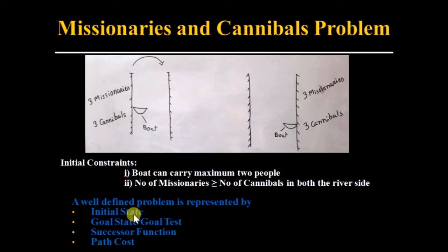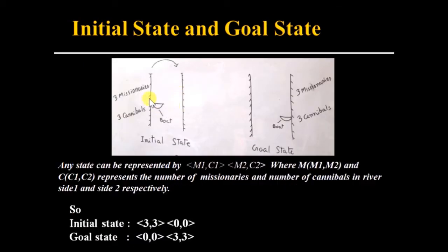We have to define the initial state, goal state, and successor function, and find the path cost to solve this problem. This is our initial state and this is our goal state: three missionaries and three cannibals on river side one, and they will cross the river so that three missionaries and three cannibals end up on the other side.